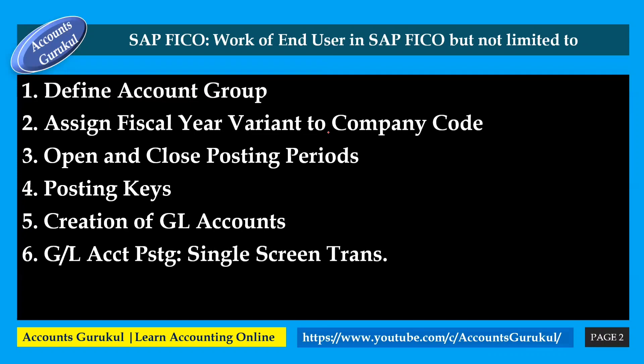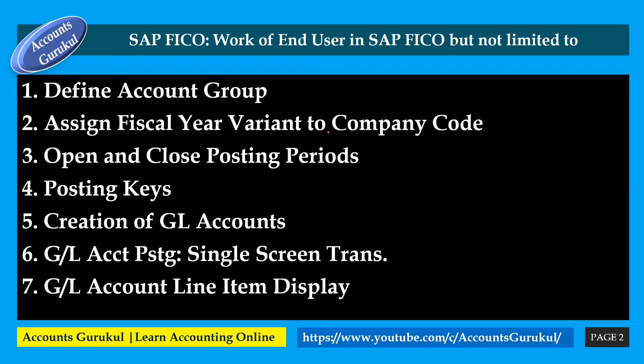GL account posting — single screen transactions. If you are going to do journal entries in the system through single screen transactions, how do you do that? What T-code do you use for that? That is essential for you to know. GL account line item display — how do you pull the GL data from the system? What T-code is used to get that report, so you can see the GL account line item display report and pull out the journal ledger dump?